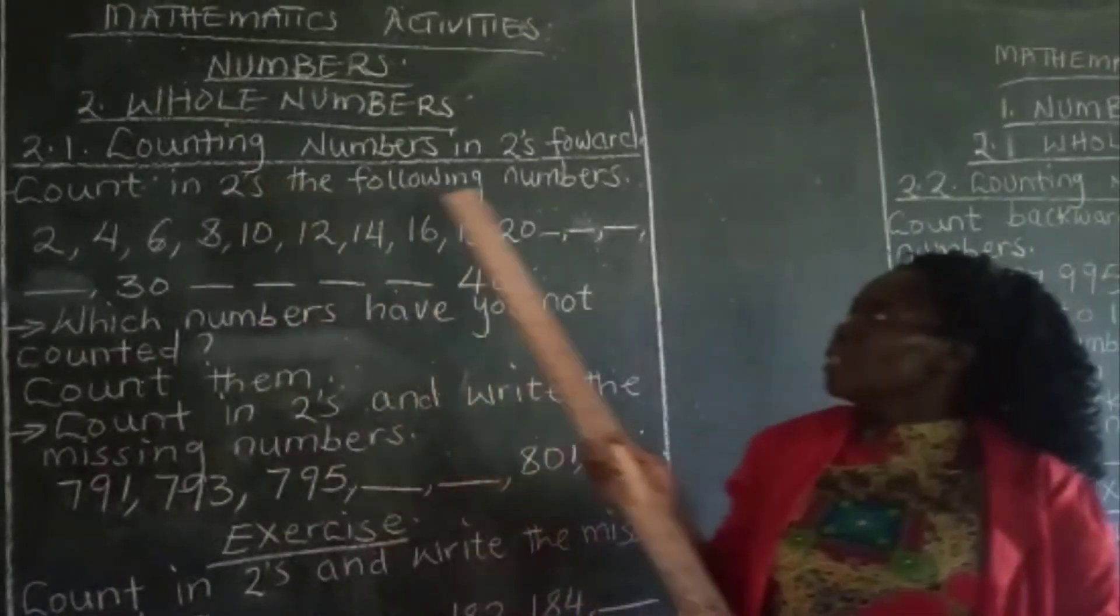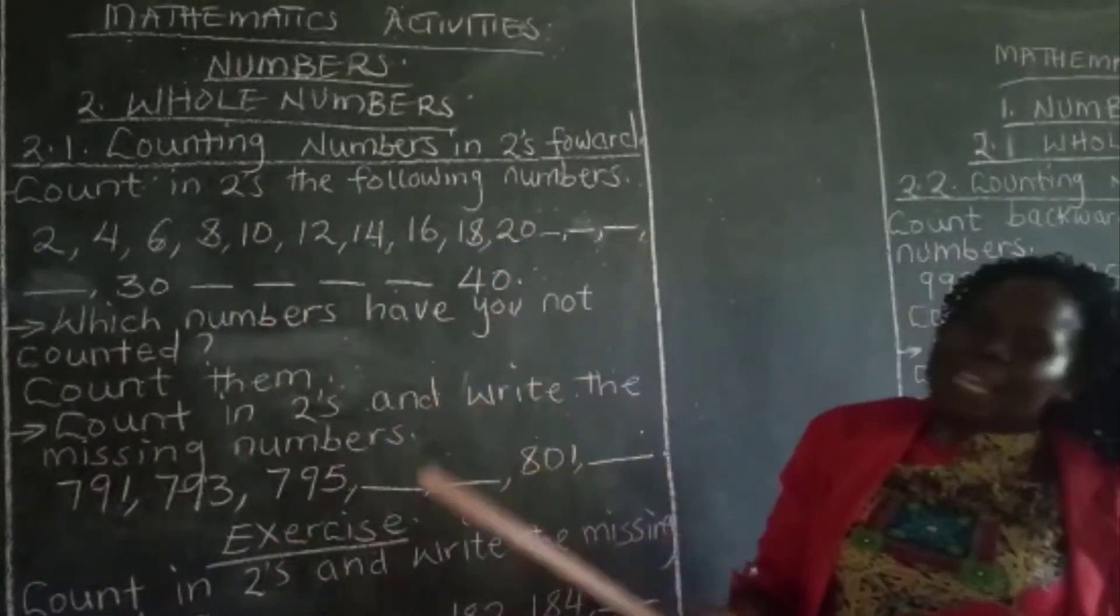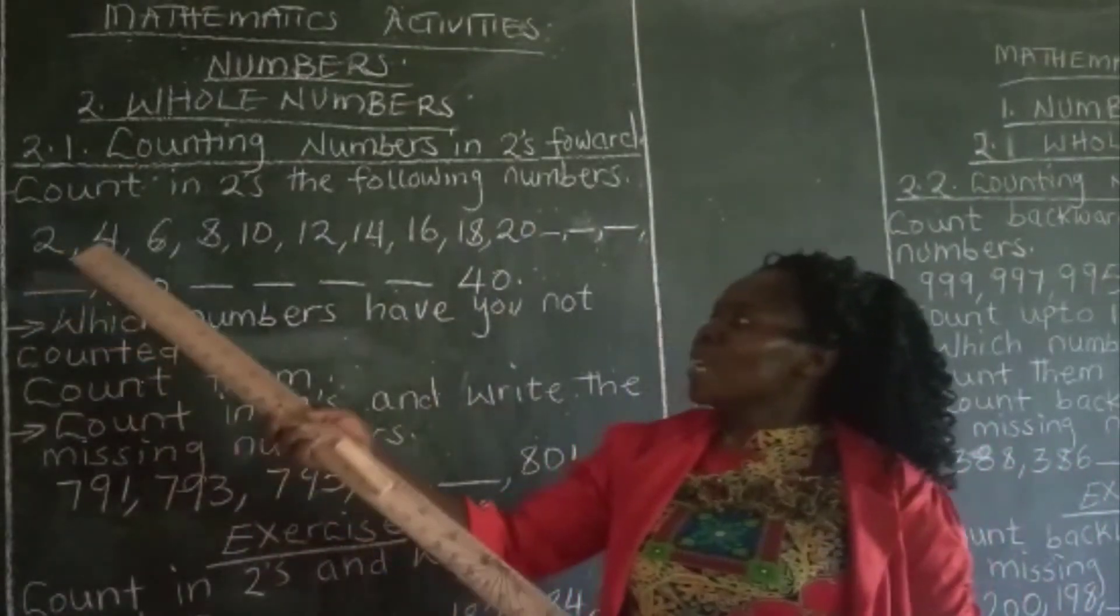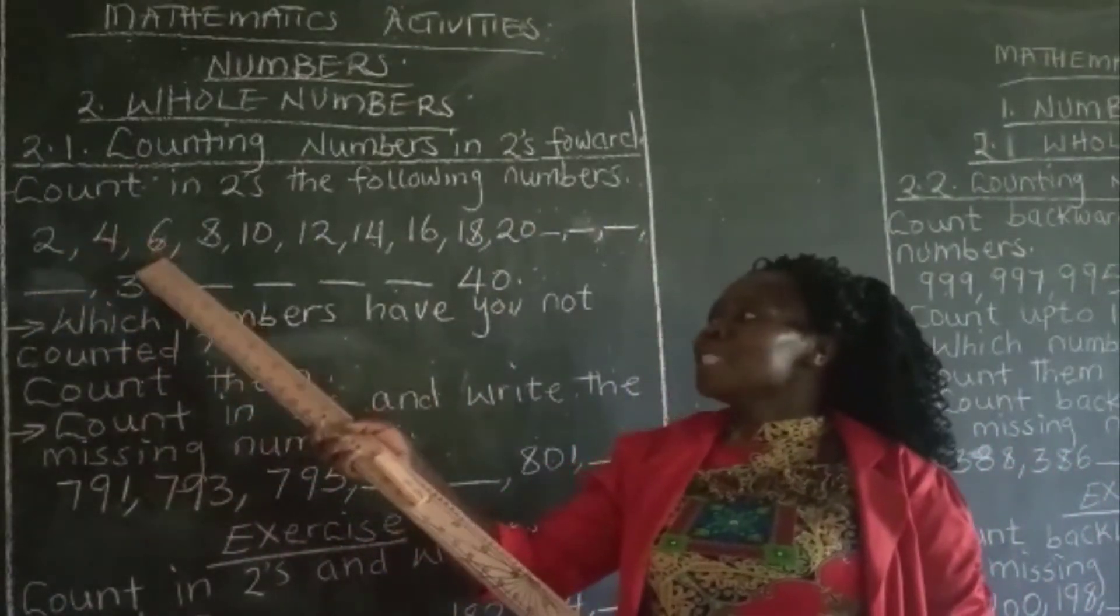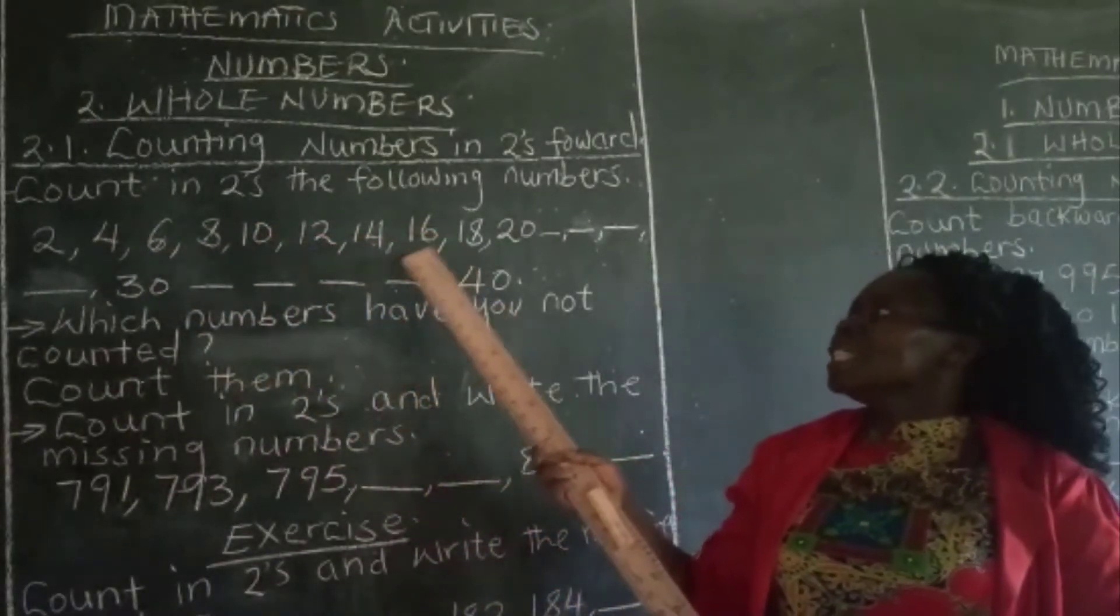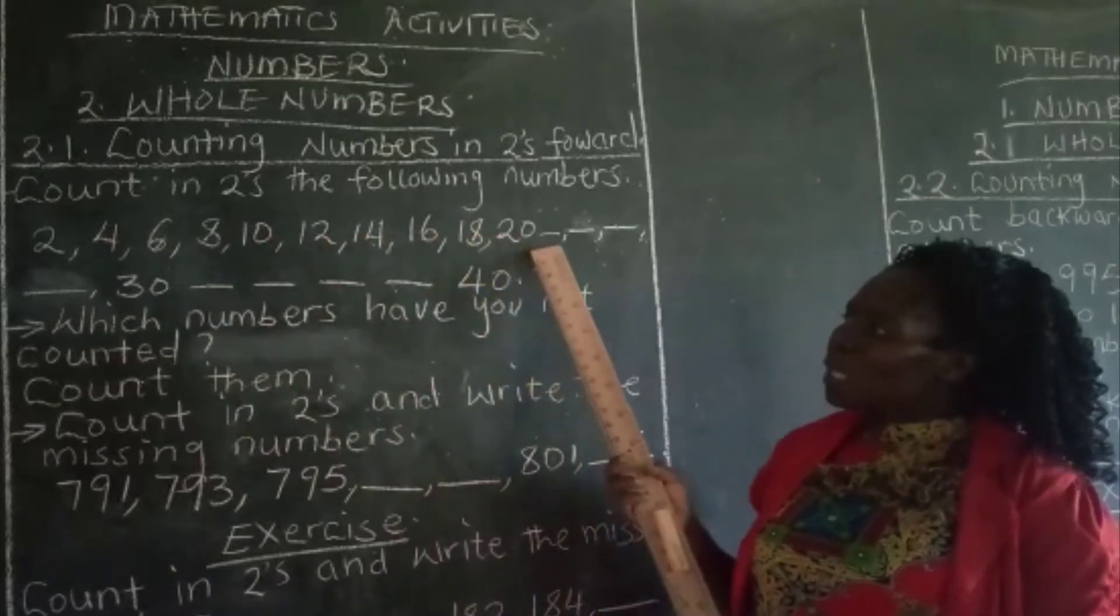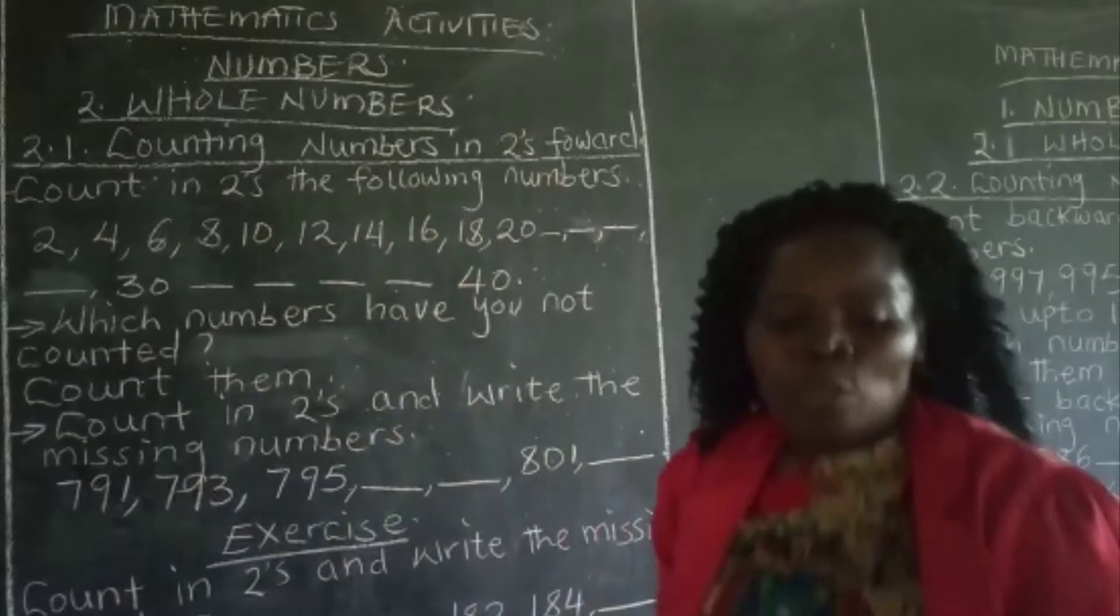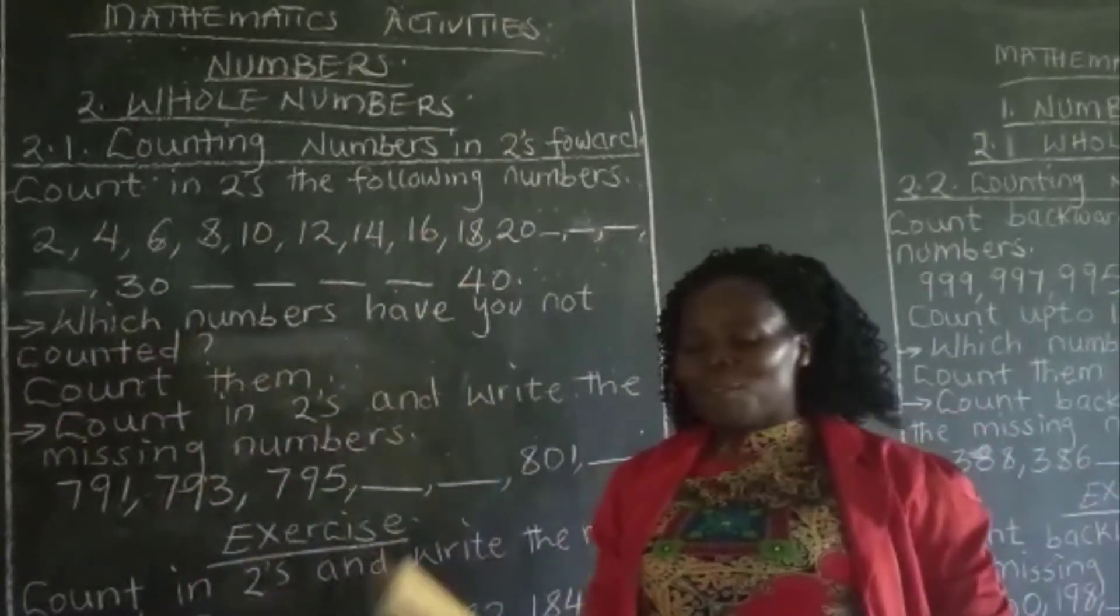Count in twos the following numbers. Let's count together learners. We have 2, we have 4, we have 6, 8, 10, 12, 14, 16, 18, 20 and so on. We can use a number line to count numbers forward.